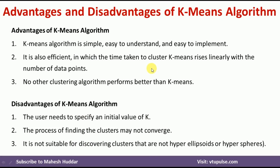Now we will understand the advantages and disadvantages of the K-means algorithm. The advantages are that K-means is simple, easy to understand, and easy to implement. It is also efficient — the time taken to cluster rises linearly with the number of data points. No other clustering algorithm performs better than K-means, making it the most preferred and widely used clustering algorithm in unsupervised learning.